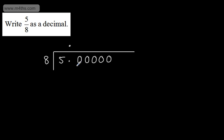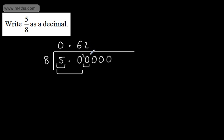Loading this up with zeros. The first question is: does 8 go into 5? The answer is no, so we put a 0. Does it go into 50? Yes — it goes in 6 times, since 6×8=48, so we go in 6 times with remainder 2. Does it go into 20? Yes, it goes in twice, giving 16, with remainder 4. Does it go into 40? Yes, exactly 5 times — no remainder, so we've finished our division.